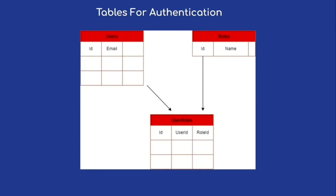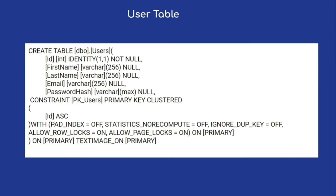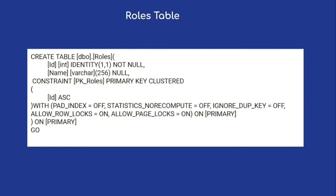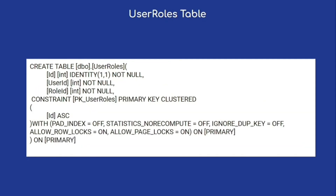Our authentication tables look like this: 'Users' will contain user information, 'Roles' will contain role information like admin or super admin, and there is a mapping table 'UserRoles' where we can add multiple roles for any user, mapped with UserID and RoleID. This is the ideal structure for authentication tables. Here is the SQL script for the Users table, Roles table, and UserRoles table — you can run these in your SQL Server database.